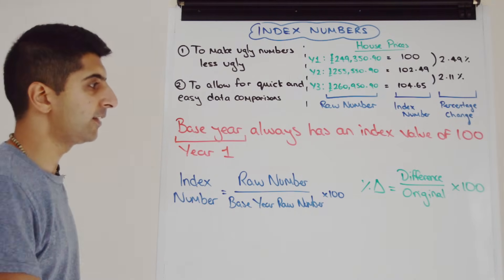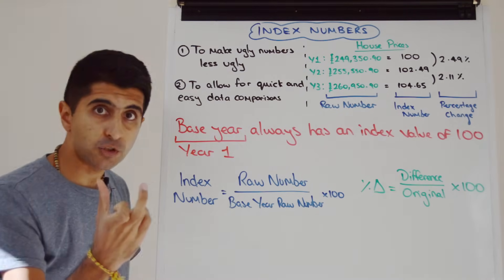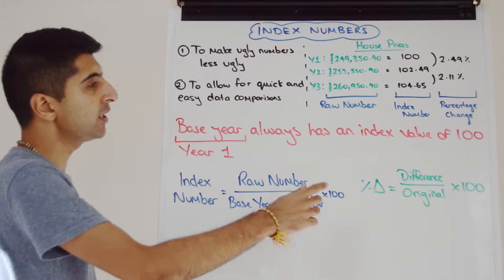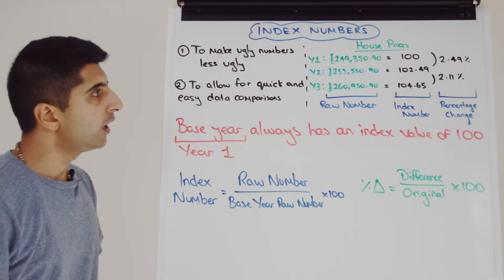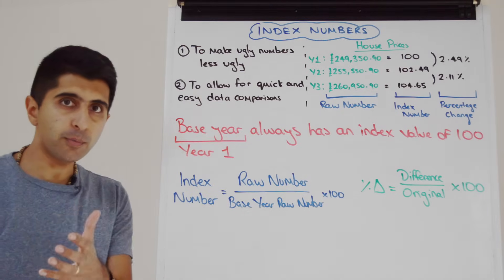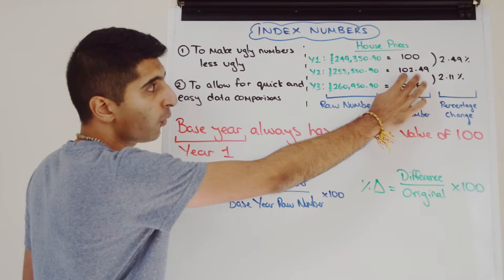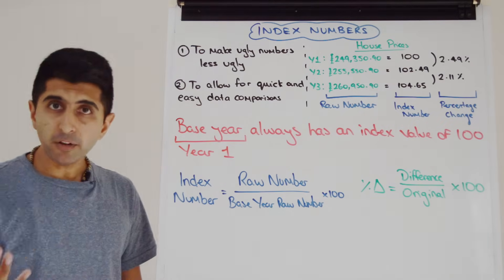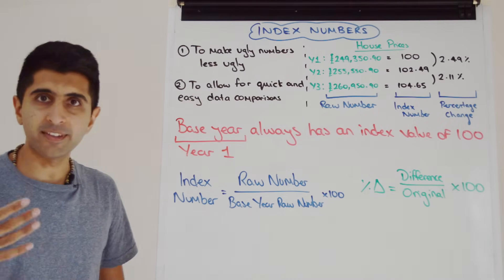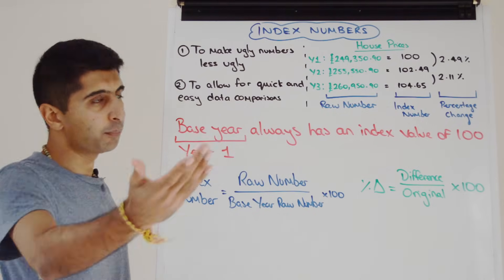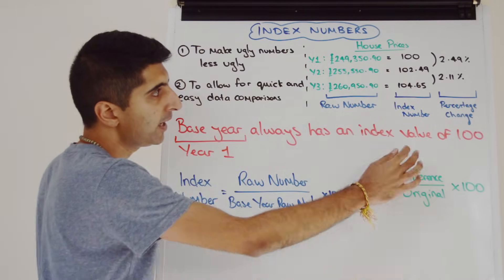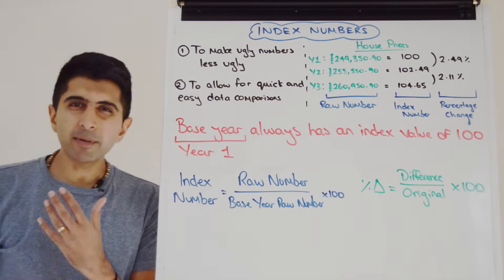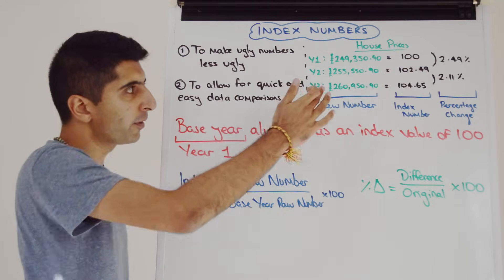Remember the equation to get a percentage change: it's always the difference between two numbers, divided by the original starting number, then multiply by 100. So to find the percentage change in house prices in year two, we take the difference between 102.49 and 100, which is clearly 2.49, divide by the starting number 100, and multiply by 100 — giving 2.49% as the percentage change. Then between year two and year three, apply the same formula: the difference divided by 102.49, times by 100, gives 2.11%. This makes our life much easier compared to computing with these horrible large raw numbers, which can be very long-winded.